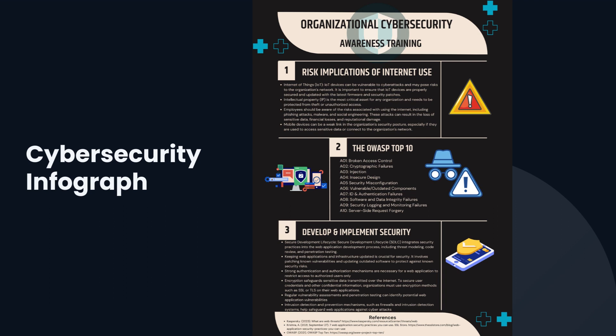Lastly, we have the cybersecurity infograph. This infograph is a representation of three major organizational cybersecurity awareness training topics: first, risk implications of internet use; second, the OWASP Top 10; and third, developing and implementing security. These topics are relevant and timely for everything that is happening these days. That concludes this presentation — thank you very much for listening and have a good day.